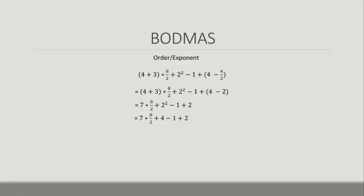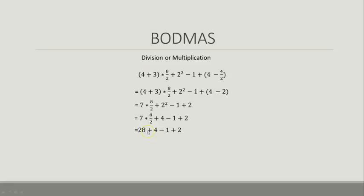Next we take care of the Order term. We've finished the brackets, so now we're at Order: 2 squared becomes 4. Then we handle the Division: 8 divided by 2 gives 4. Next is Multiplication: 7 times 4 gives 28.